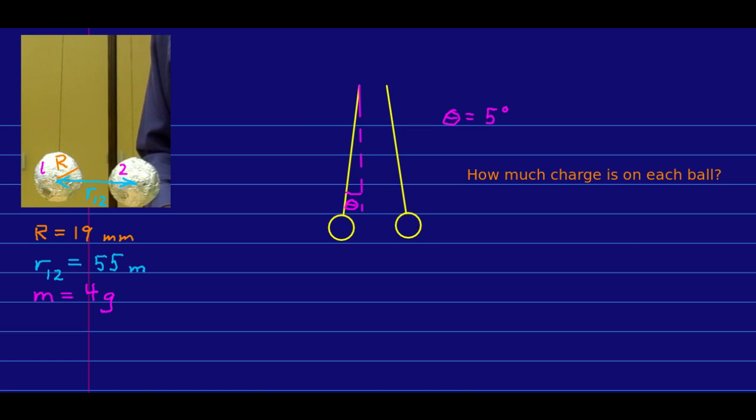In an earlier video lecture in this unit, I charged two aluminum-covered ping-pong balls and they repelled each other. Let's use a situation like that to figure out how much charge we actually would have transferred to these balls. This will give us an idea of the orders of magnitude of charge we're often dealing with. If these two balls were in contact with each other when they were charged, they would have shared their charge equally, so there will be some amount of charge Q, and it's the same on each of these two balls.